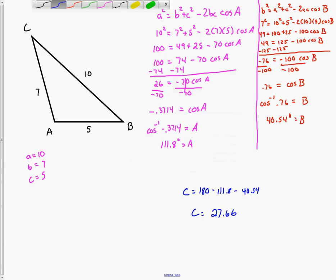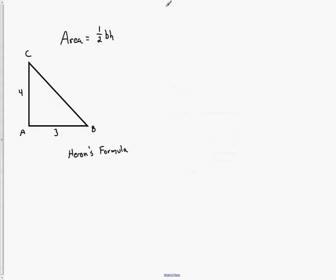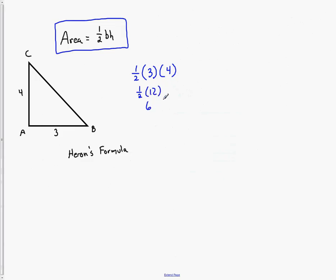The last thing we'll talk about is the area of a triangle. Normally, area equals one half the base times the height. If you're given a triangle with base 3 and height 4, then one half times 3 times 4 equals 6 square units. Area is always in square units.